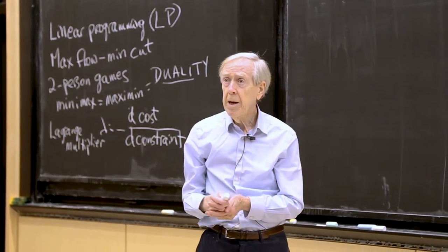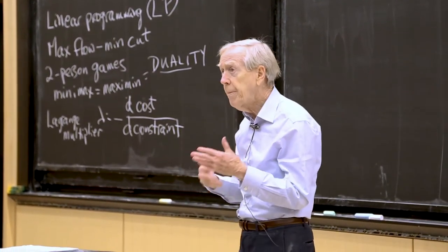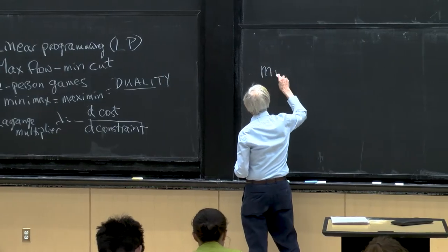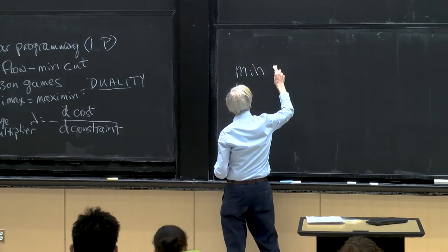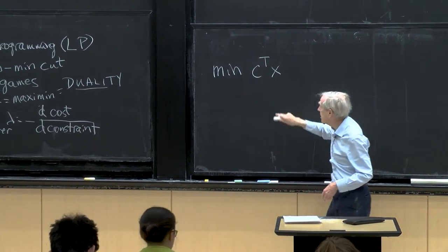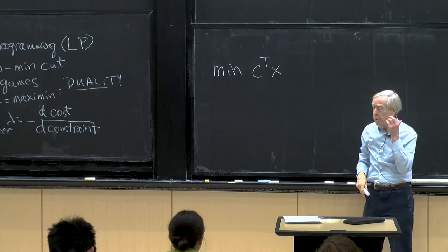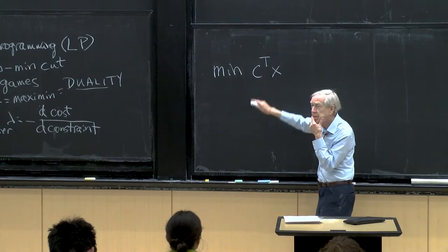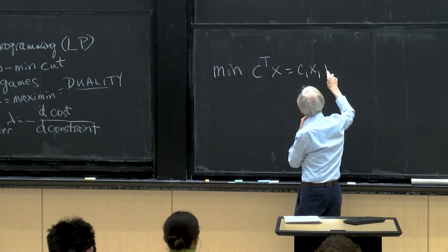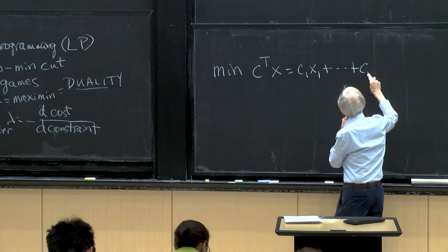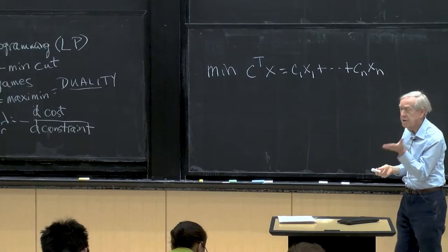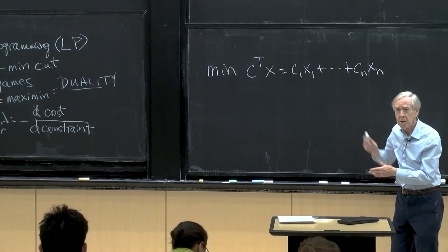So what is linear programming? We're optimizing a linear cost function — minimizing the cost c transpose x, where x is the unknown vector we're looking for and c is the cost vector: c1x1 plus ... cnxn. You can see why it's called linear programming: the cost is linear.